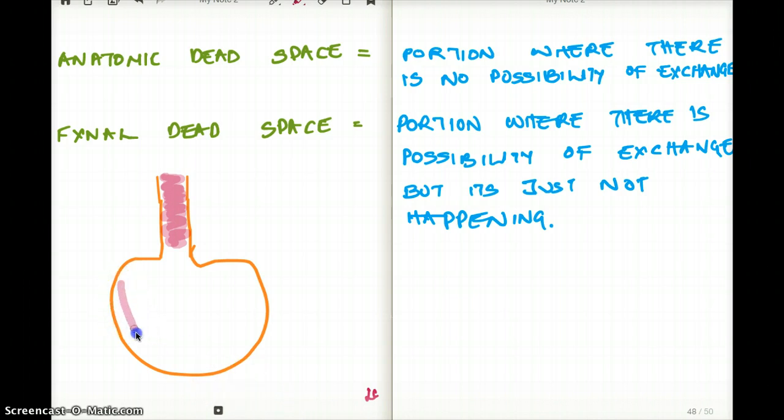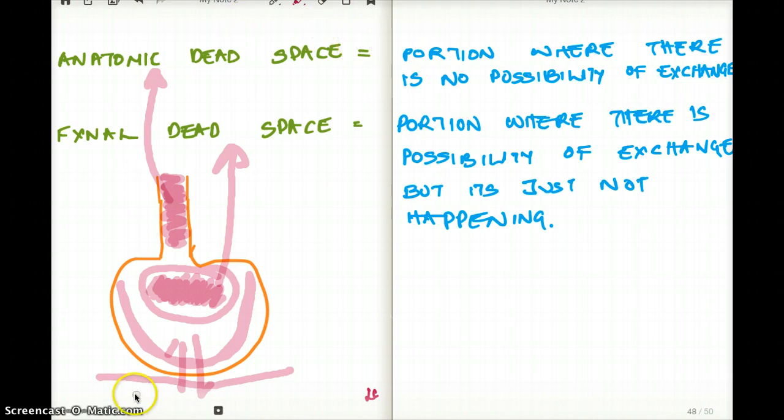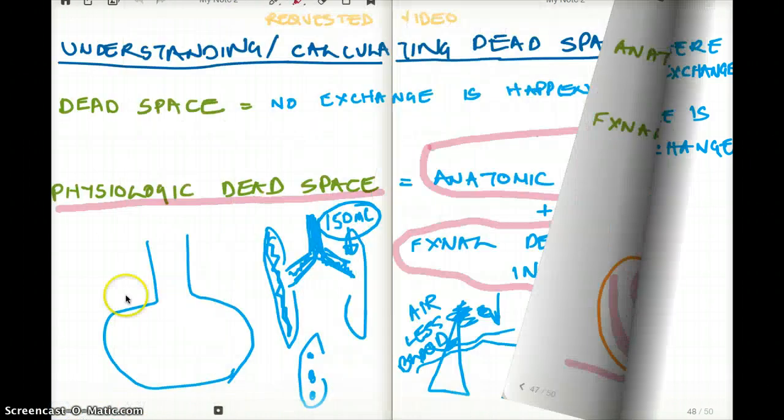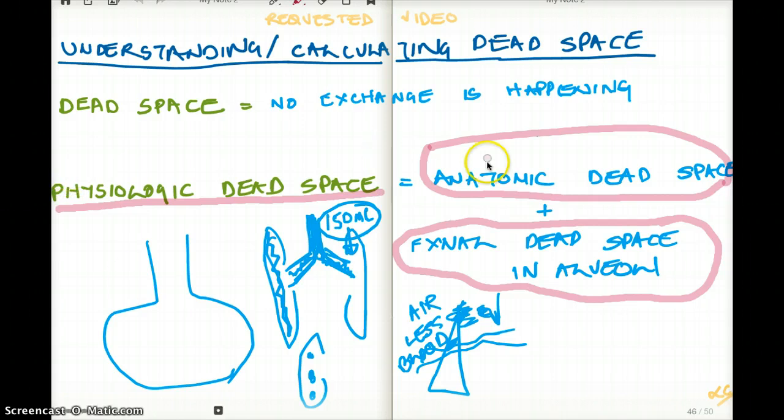But you have air coming in here in your alveoli, which is taking part in your exchange, because the blood is here and you can see how the exchange is happening between the two. What about the air that is stuck in here, which is in the lungs, but it's not taking part in the exchange? This is our functional dead space and this is our anatomic dead space. The combination of the two makes our physiologic dead space.